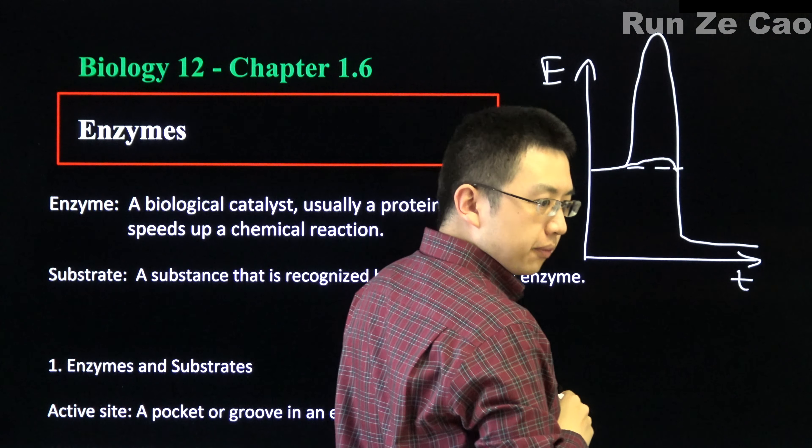The induced fit hypothesis says that when you bind the substrate to the active site, the enzyme undergoes a conformational change so that it better binds the substrate. After the reaction has occurred, the products may induce another conformational change so that the enzyme is not as good at binding product. This is not necessarily always the case, which is why enzymes can catalyze the reverse reaction as well.